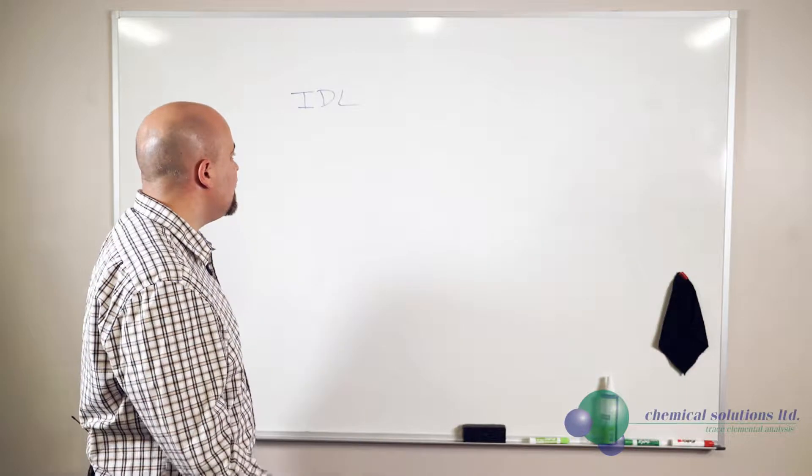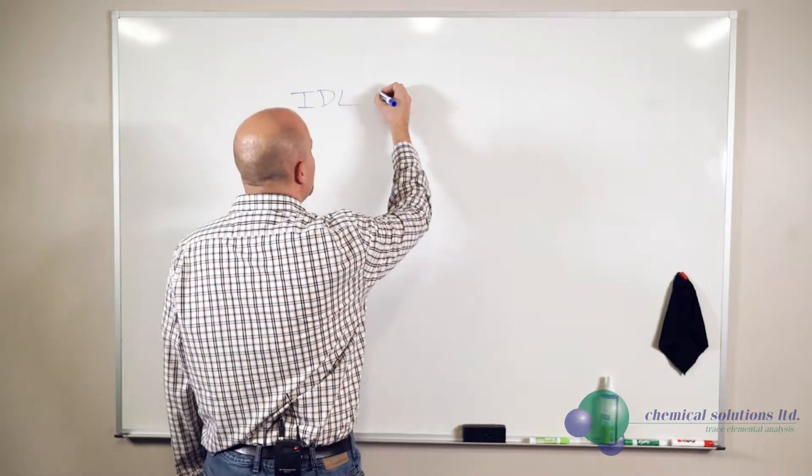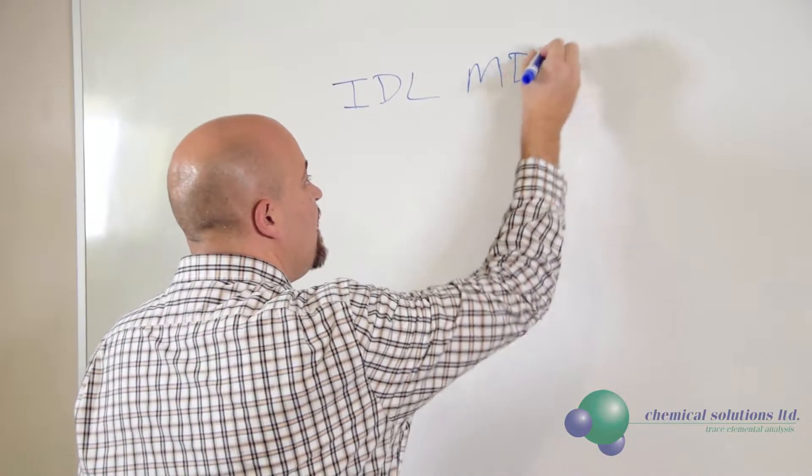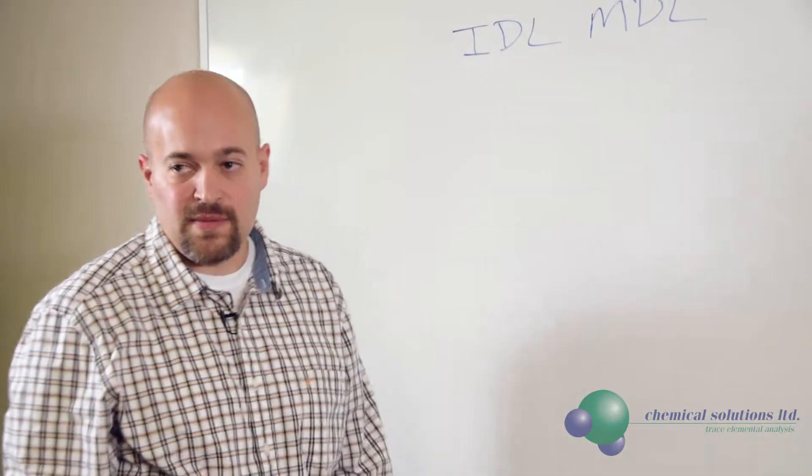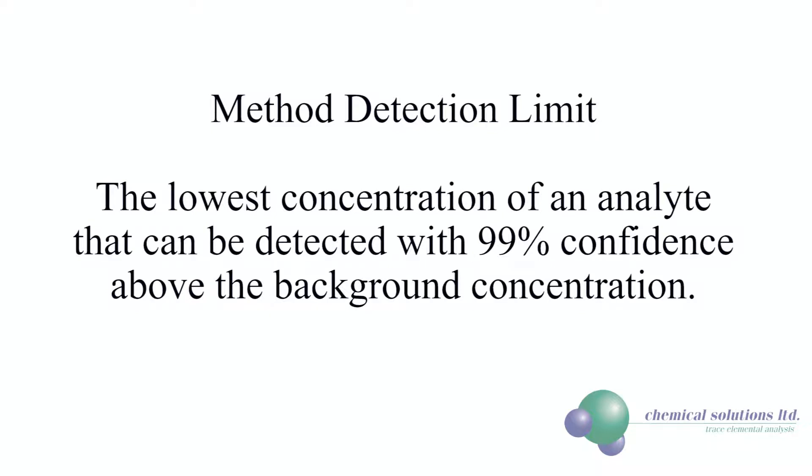The next detection limit would be an MDL or a method detection limit. The method detection limit is defined here as the lowest concentration of an analyte that can be detected with 99 percent confidence above the background concentration.